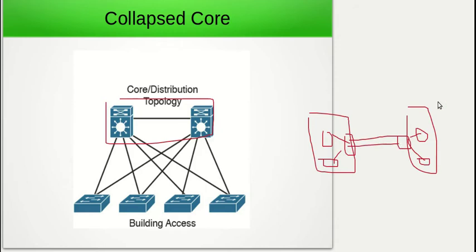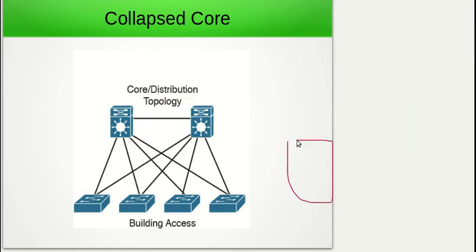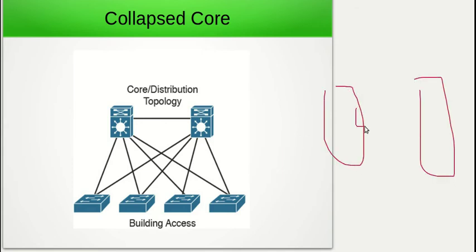Because this still follows the Cisco model, if we added more buildings we could then create a full core layer and separate the functions individually. Think of the distribution layer as forwarding traffic between switches in the same building, and the core layer as connecting your buildings together. That's why the collapsed core model exists — because we may only have one or two buildings, and instead of purchasing expensive core layer switches, we can combine the functions into a single layer, which saves us money but still allows us to have redundancy and scalability. And if we add more buildings, we're still able to add in a core layer.